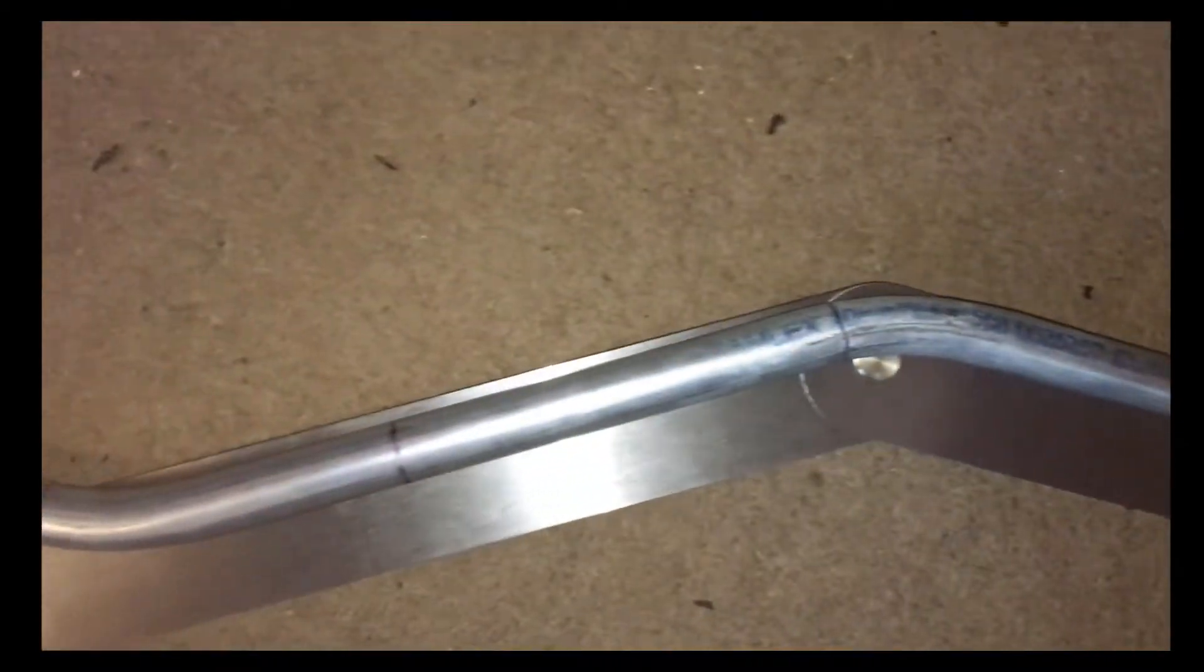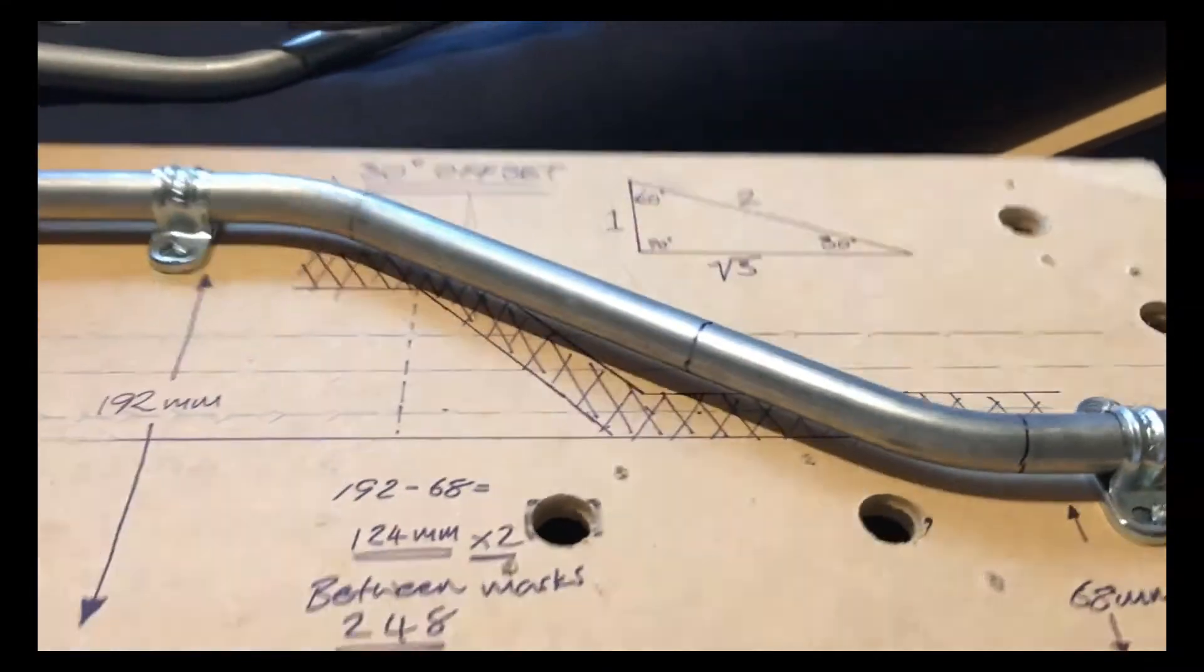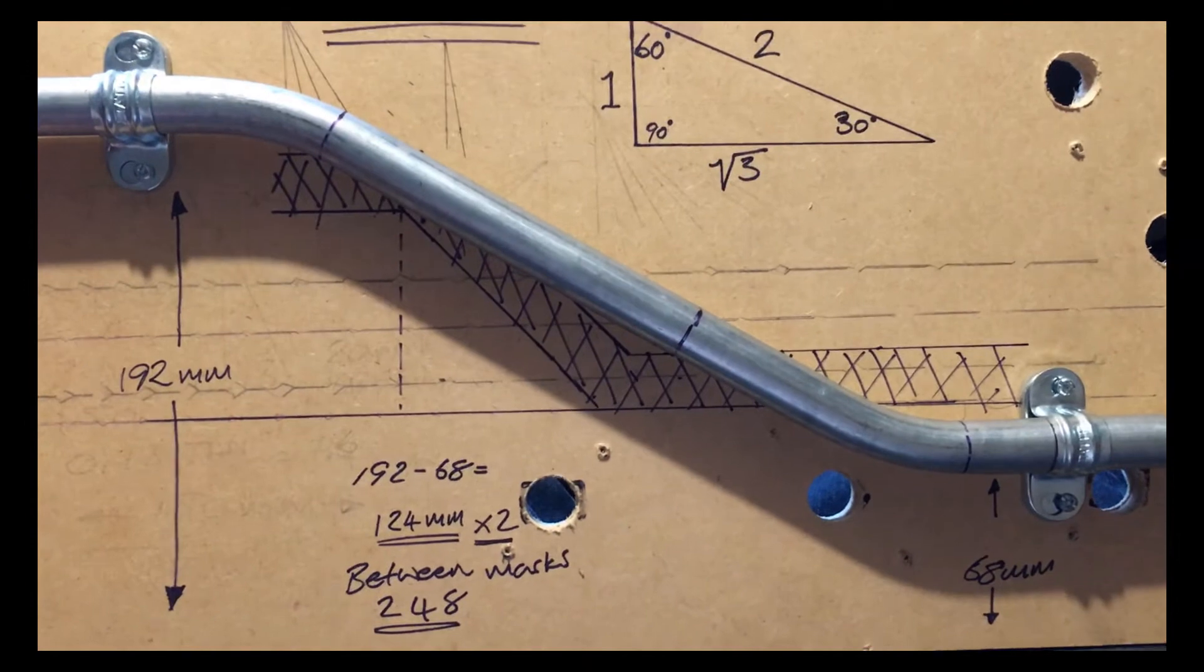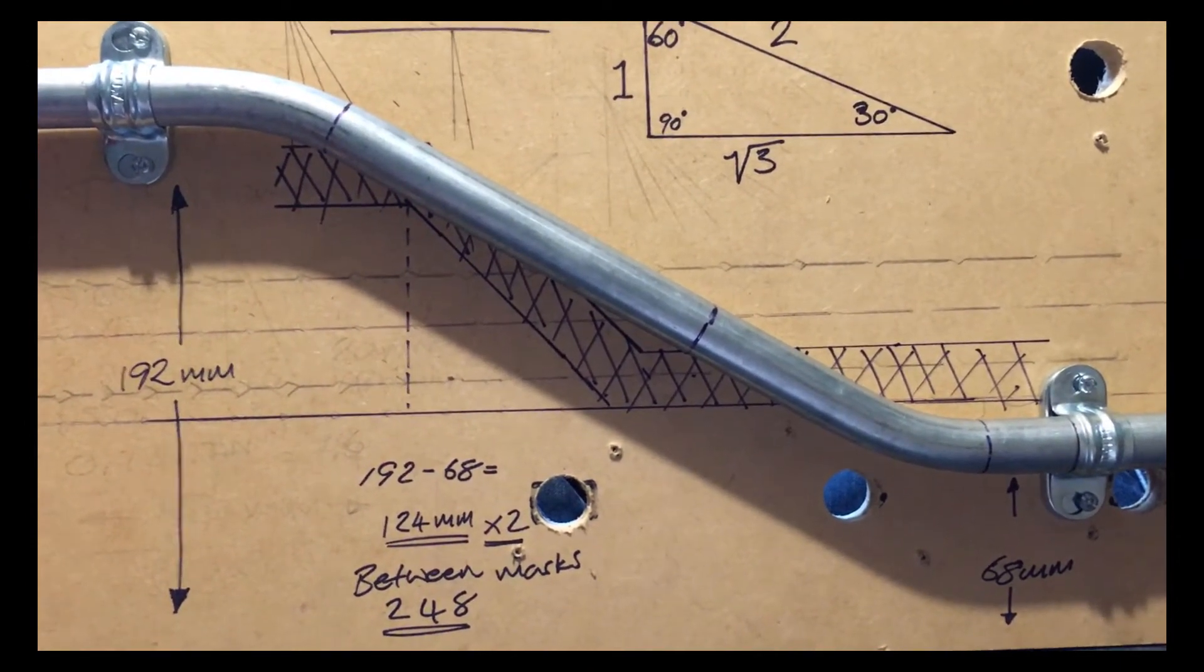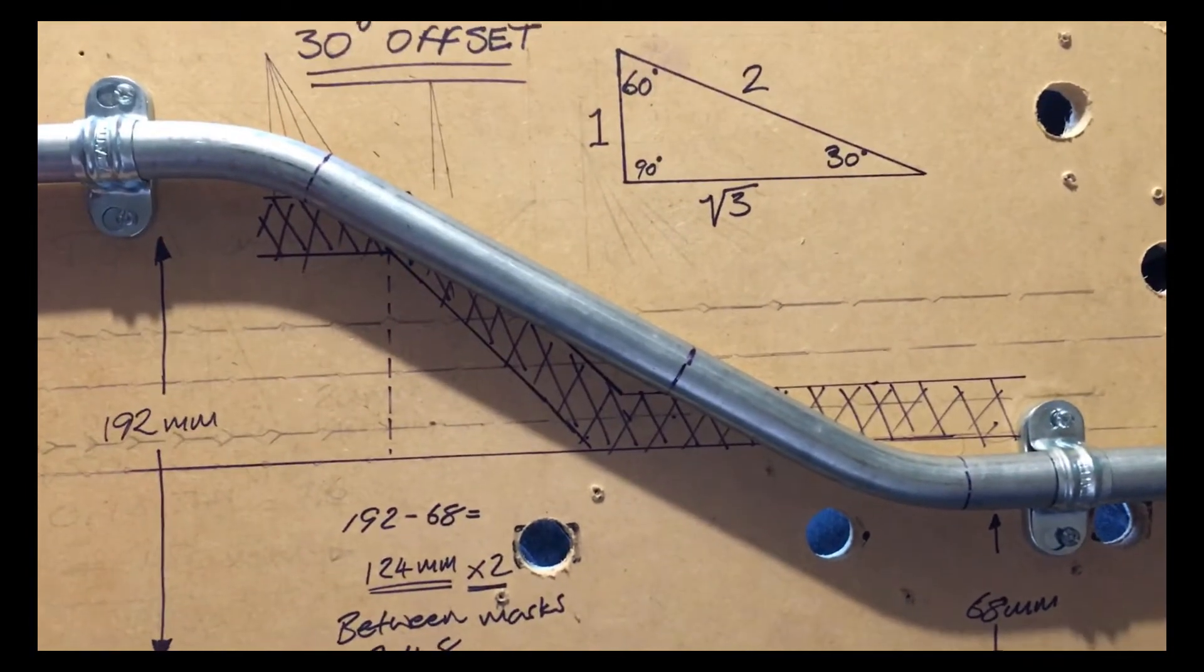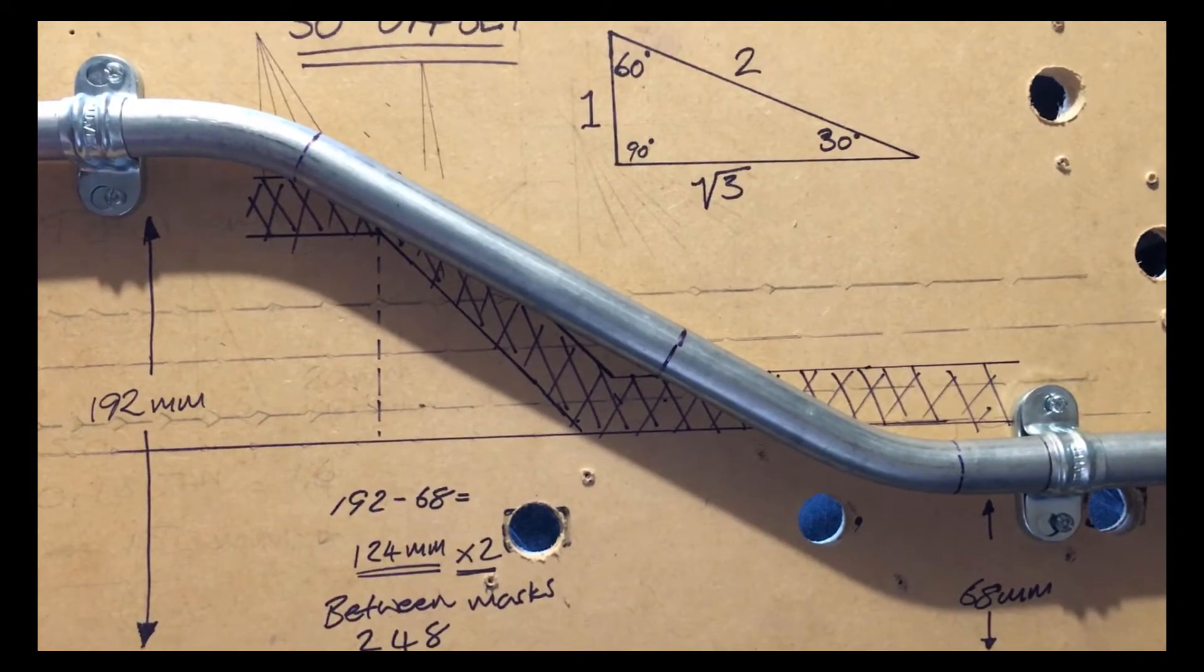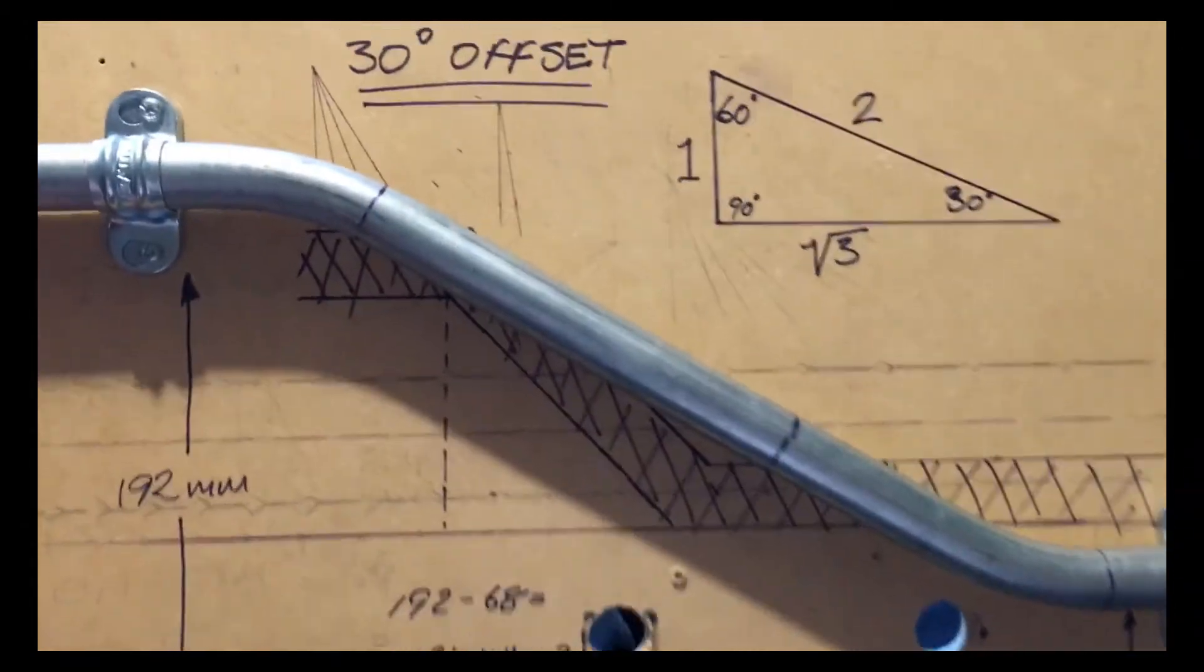So here you can see the finished product. It didn't take too long to do - it requires some mucking about, over bending and under bending it a little bit to get it to fit, but it seems fairly accurate. Yeah, it seems to work alright. So that's a 30-degree offset bend.